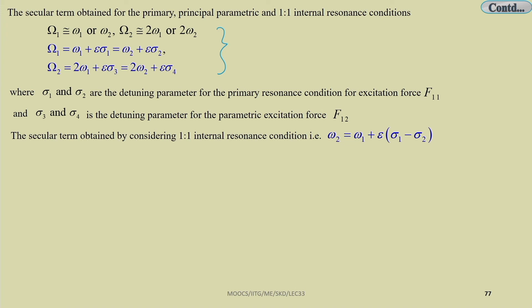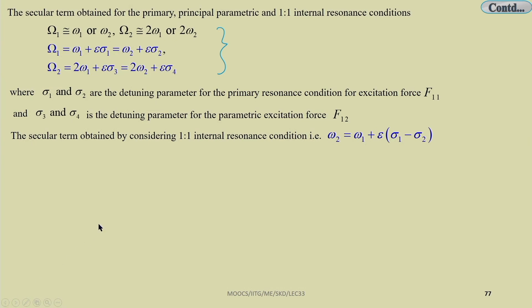One can also get secular terms and take the one-to-one internal resonance condition — the second mode is nearly equal to the first mode. By taking that condition, one can find the reduced equations in terms of a₁ and γ₁.